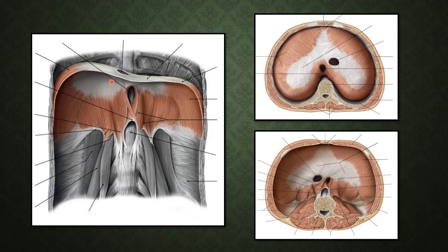The right cupola is higher than the left because of the underlying liver which pushes it up. In the central part it is tendinous. The diaphragm arises from all around the body wall and inserts convergingly towards the center, so peripherally is all its origin and centrally it is inserting.